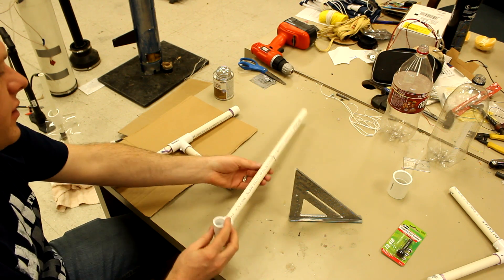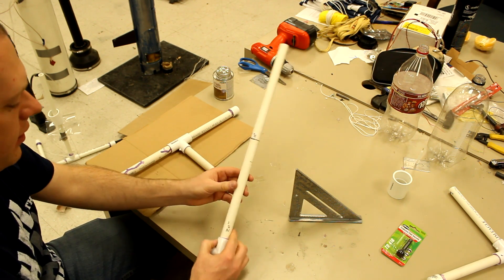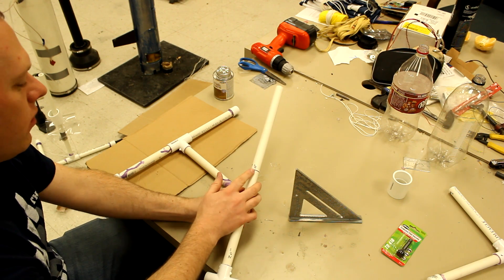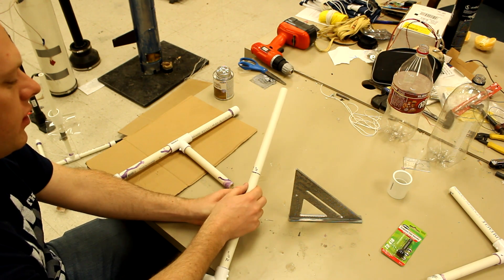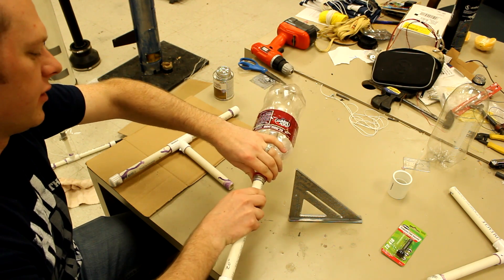Alright, the next step now is to glue one of our tees to our launch rail. Now I forgot to mention earlier, but while you're getting this bulge in your launch rail, you may want to grab your bottle and check that it makes a good seal.